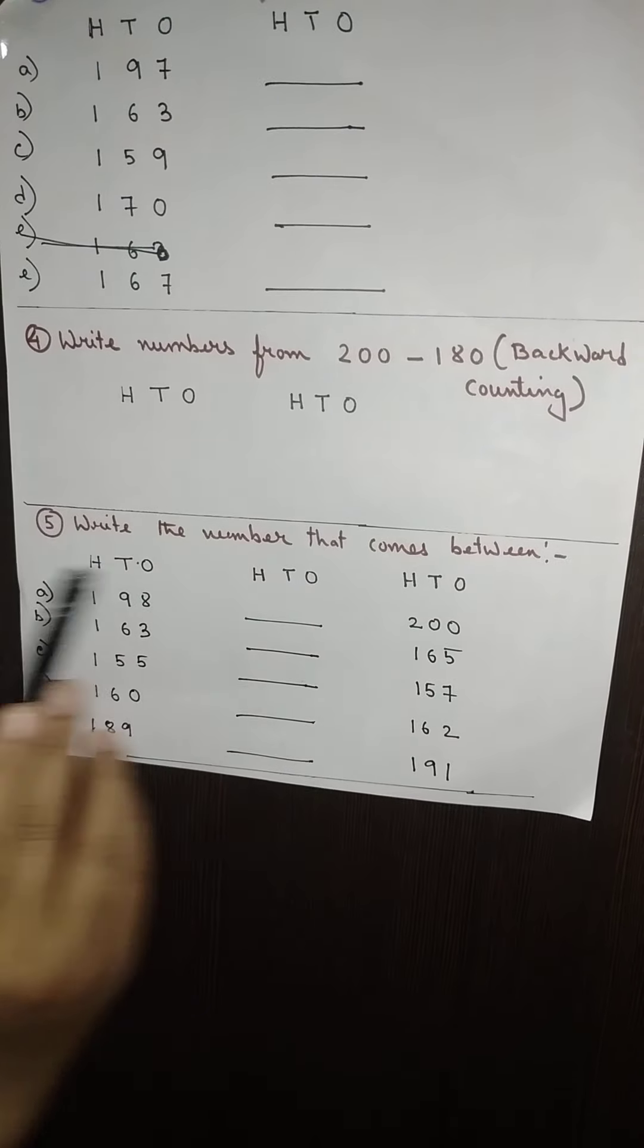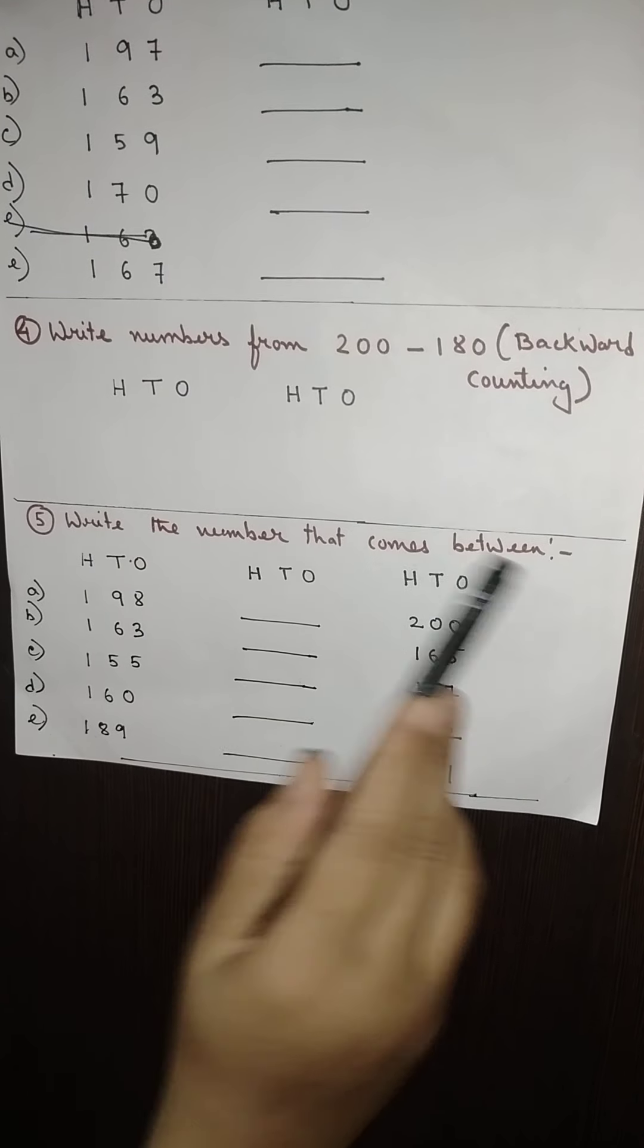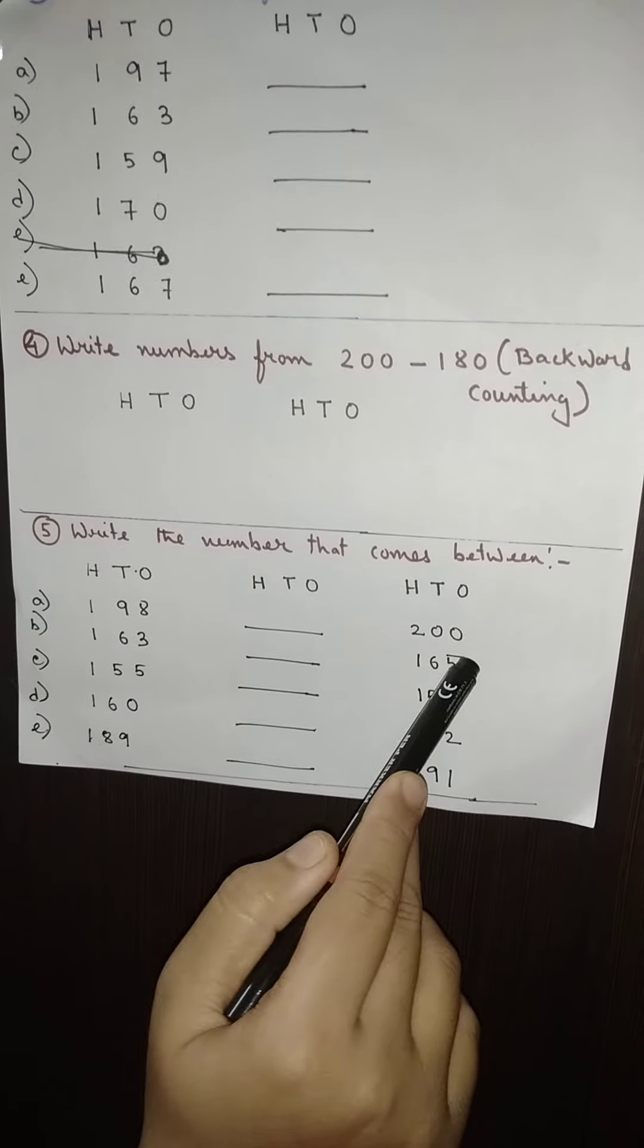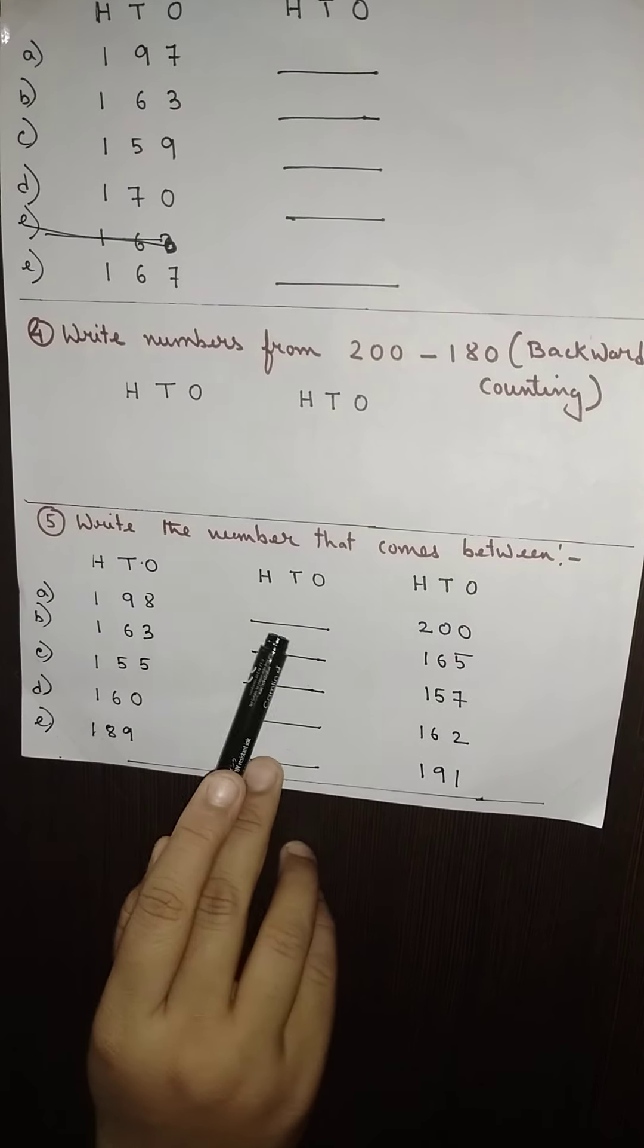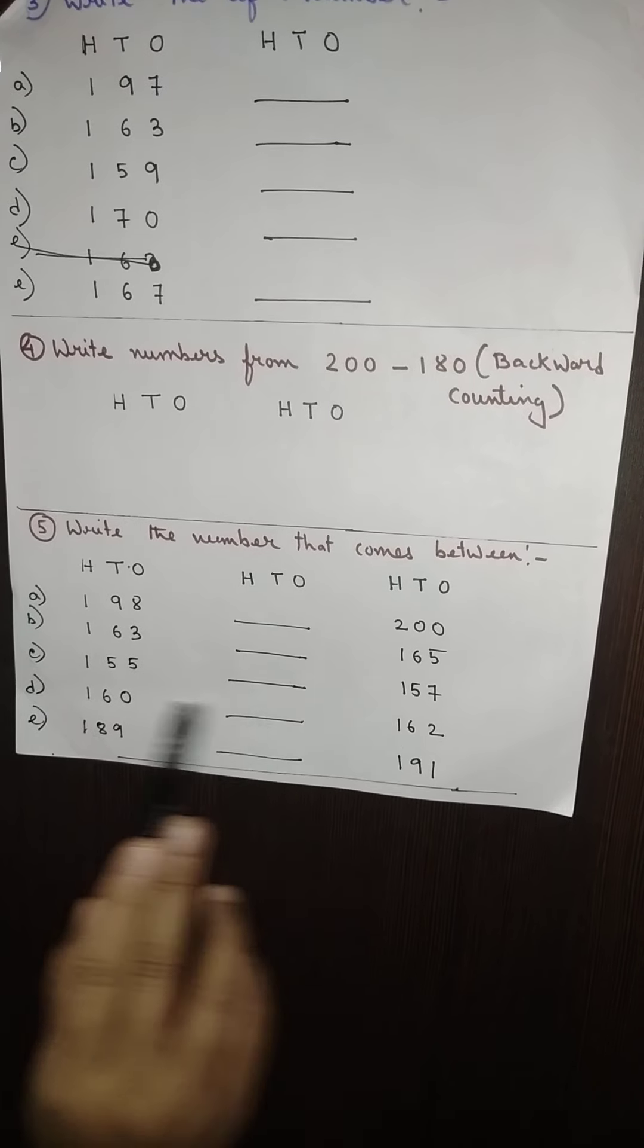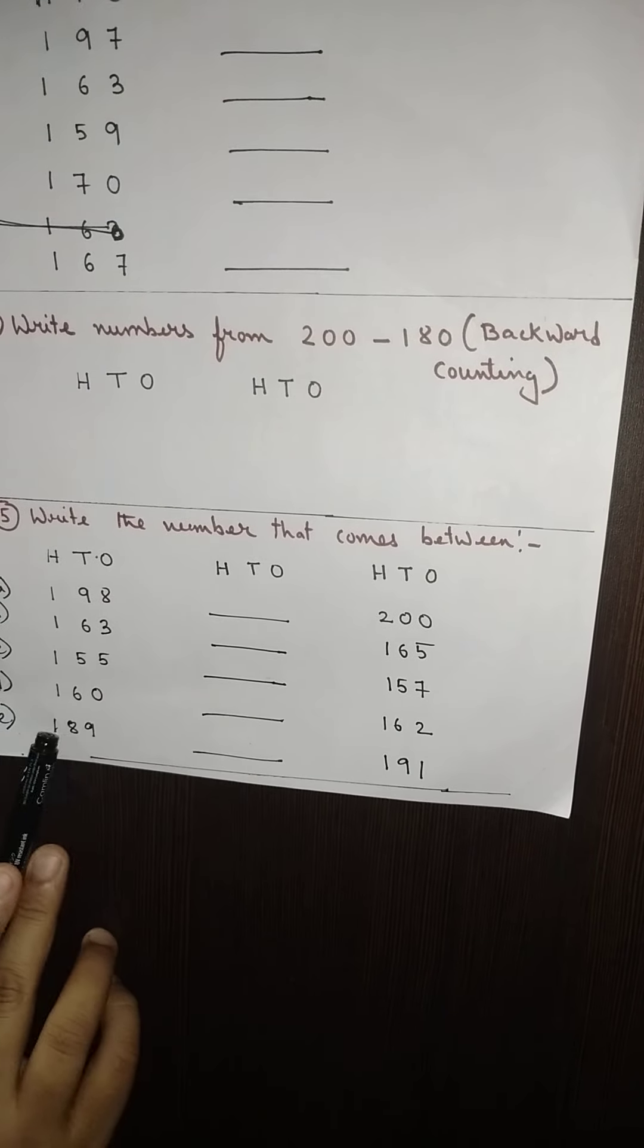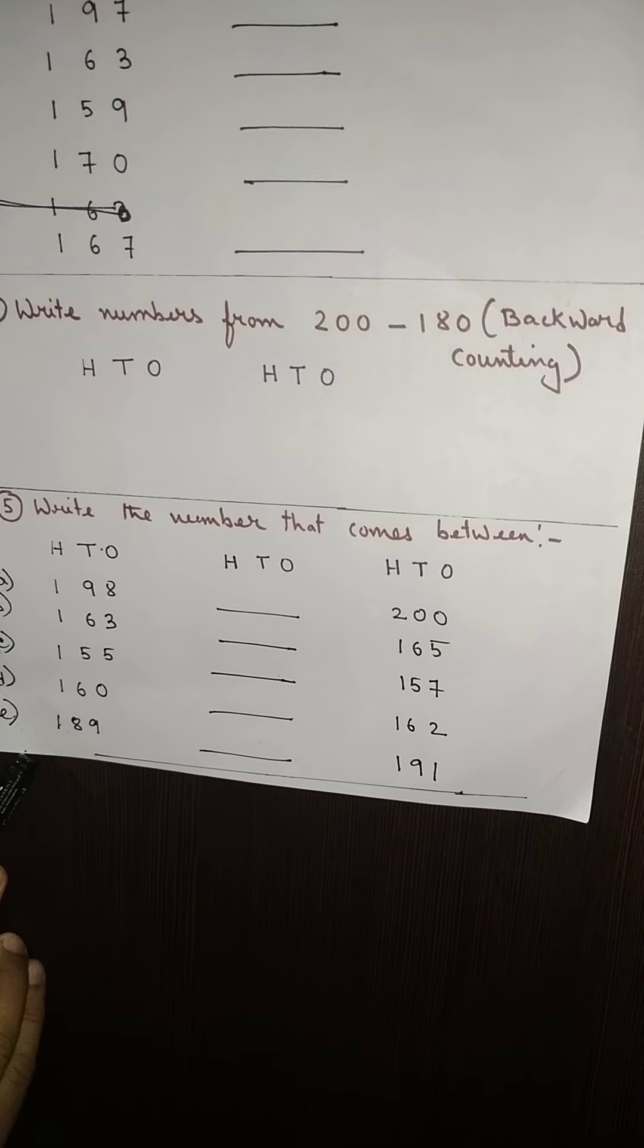Then you will draw one ending line and come to number 5. Now write the number that comes between. Here you can see I have made three columns: H T O one box, leave one box, H T O another box. A, B, C, D, and E: 198 dash 200, 163 dash 165, 155 dash 157, 160 dash 162, 189 dash 191. After this you will be drawing ending line.